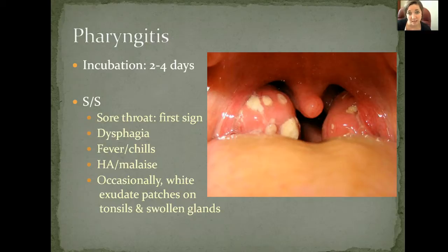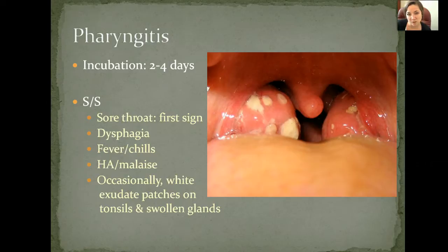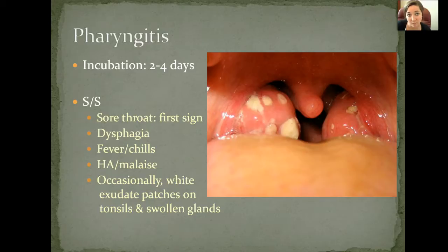The first sign is a sore throat — it starts feeling scratchy, maybe a little uncomfortable, especially when eating or drinking. Then you'll start noticing trouble swallowing, and that's usually when people go to the doctor, saying their throat is so swollen it hurts too bad to even drink anything. If you hear things like that, it's pharyngitis — inflammation and probably a pretty serious infection in the throat.